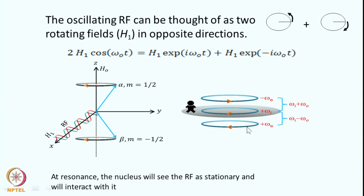If one sits on the RF component rotating in the same direction as the spins, the spins appear to precess at frequency ω_i minus ω-naught — the difference of the two frequencies. The other RF component, rotating in the opposite direction, would give a net frequency of ω_i plus ω-naught, which is in megahertz, so the spins cannot effectively interact with it. As the two frequencies come closer and closer, the effective frequency becomes smaller, eventually reaching kilohertz range.